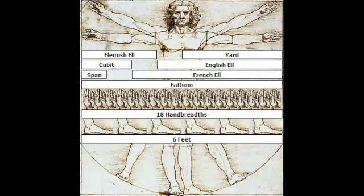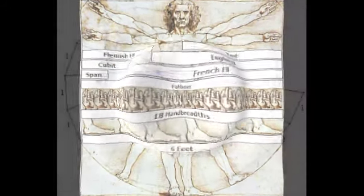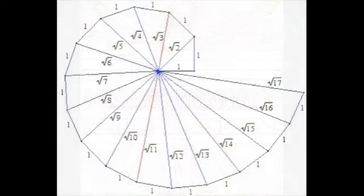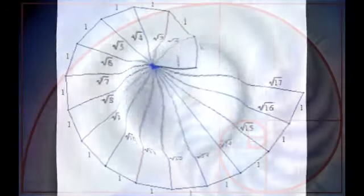These seven principles will be discussed and explained as we proceed with these lessons. A short explanation of each, however, may as well be given at this point. One, the principle of mentalism. The all is mind. The universe is mental. The Kybalion.